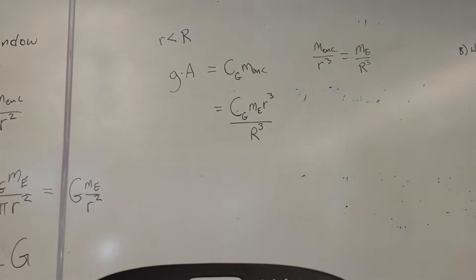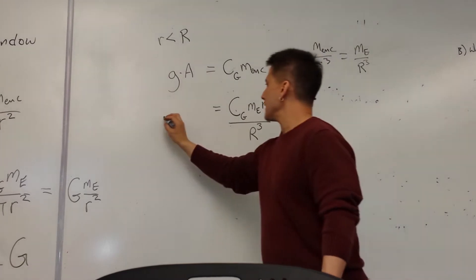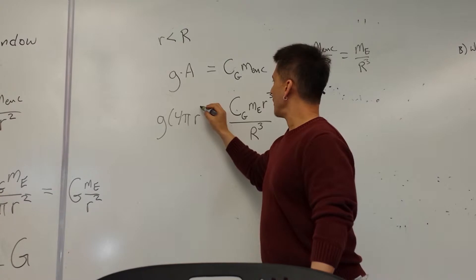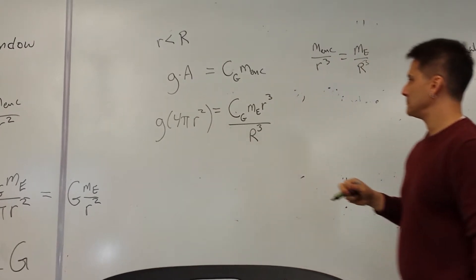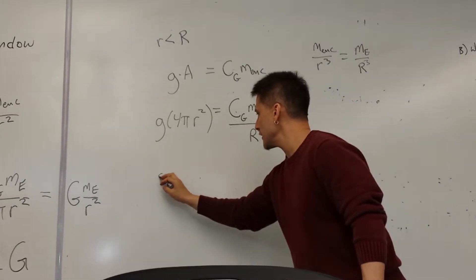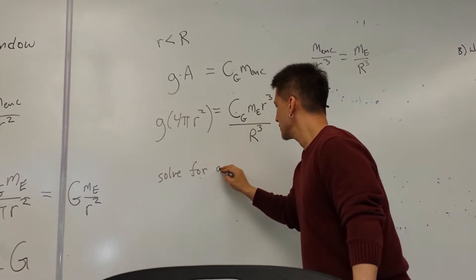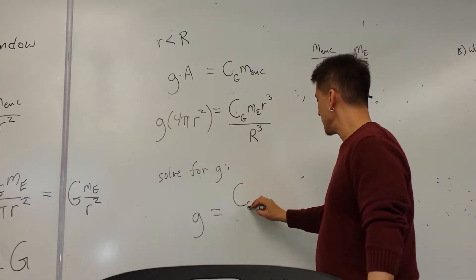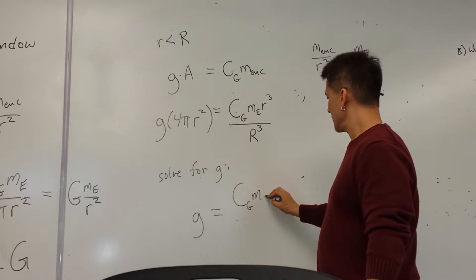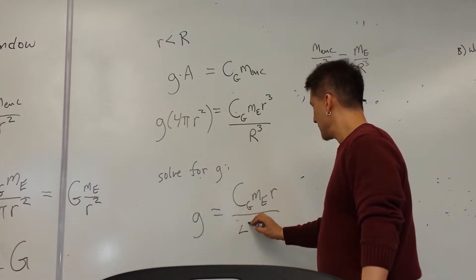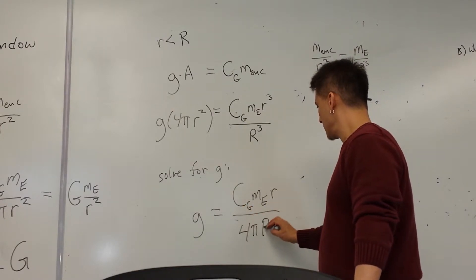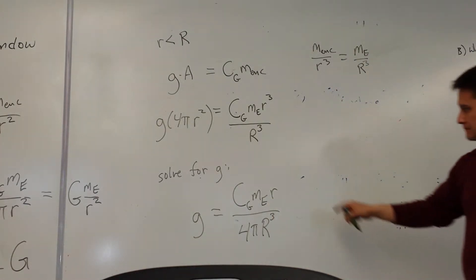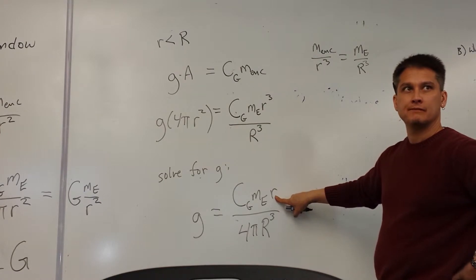And now this is G times A, so there's your 4πR². So if you solve for G, the magnitude of G should be this big C_G M_E R over 4πR³. There's your linear bar. There we go.